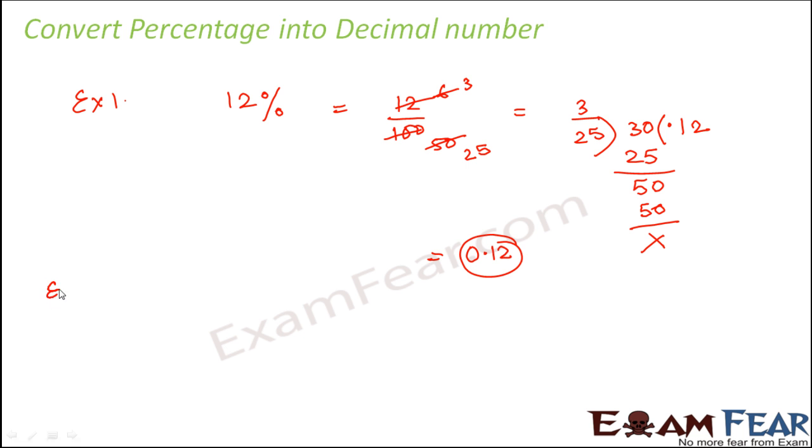Similarly, let's take another example. Let's say 150%. Now this is greater than 100%. That means the decimal number must be greater than 1. So 150% is nothing but 150 by 100.